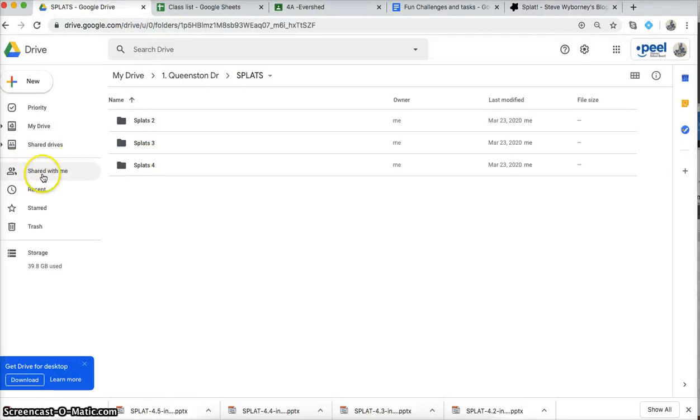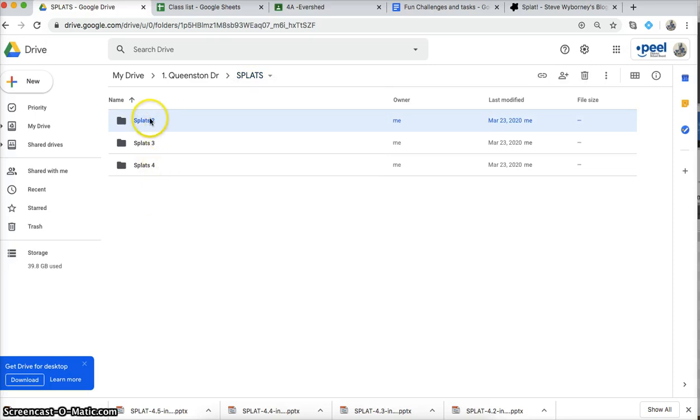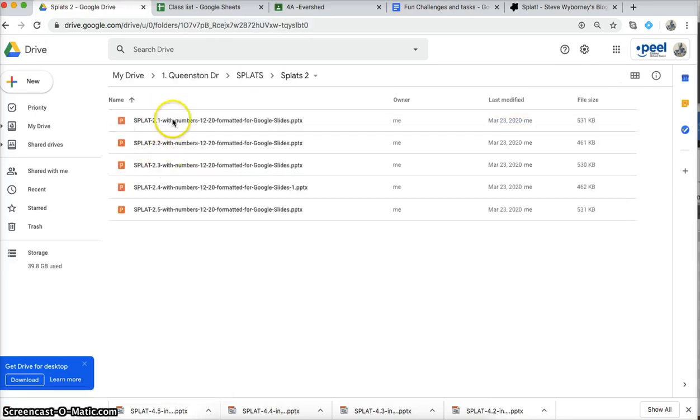So in your shared with me, you're going to see a folder called splat, and if you like these and you don't want to lose where they are, you can always add that star, and then you're always going to have them in your star folder. So there's four different levels for now. We'll start with splat 2, and there's five different ones in here.